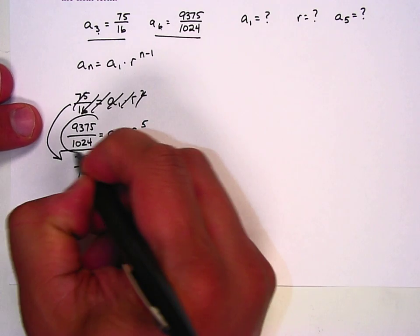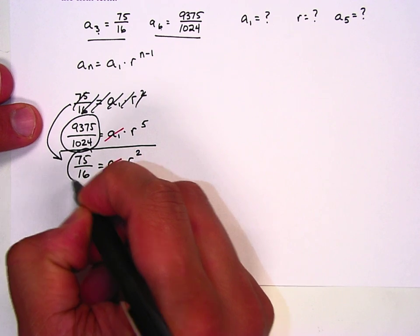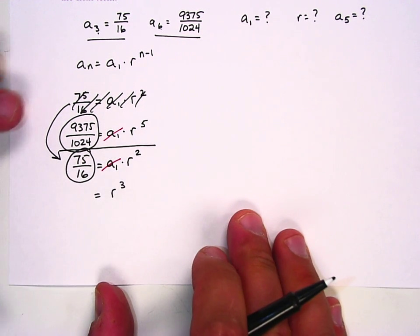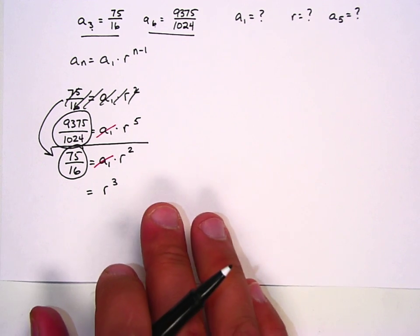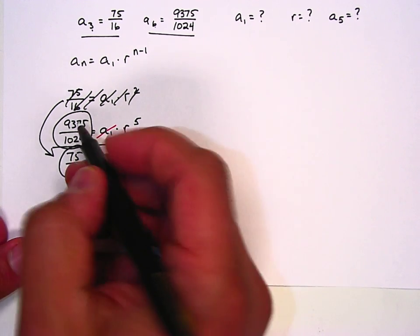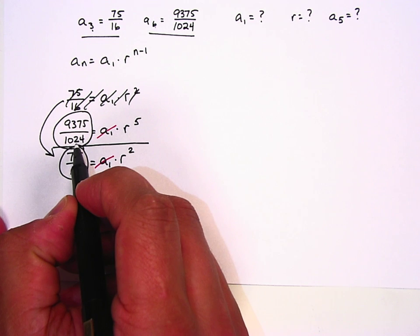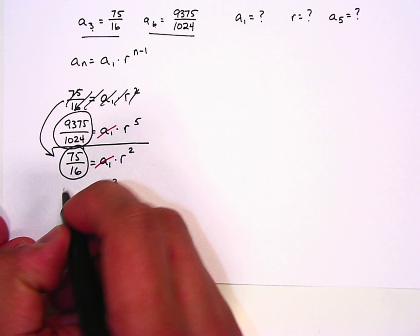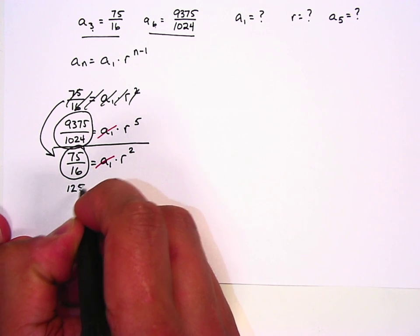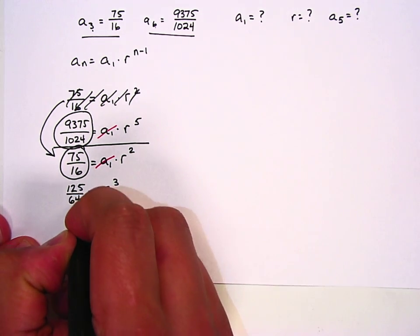The tricky part is taking this fraction and dividing by this fraction. Remember to divide fractions, you multiply by the reciprocals. I've already done this on my calculator. If you want to, you can check it out. 9375 over 1024 times 16 over 75, and that gives me 125 over 64.